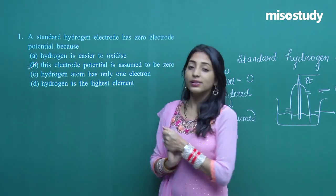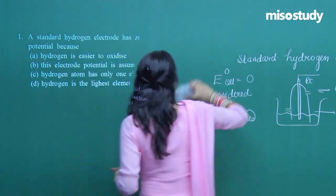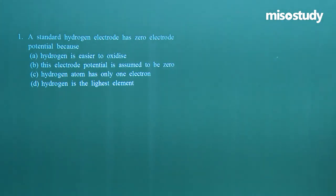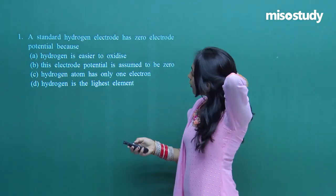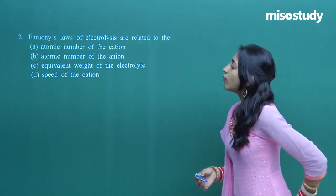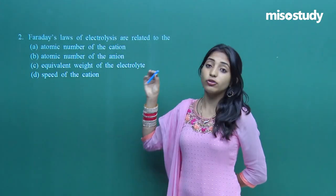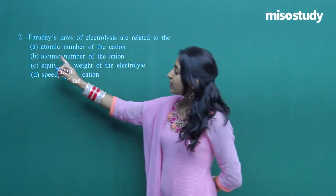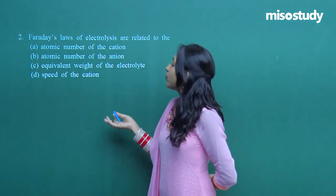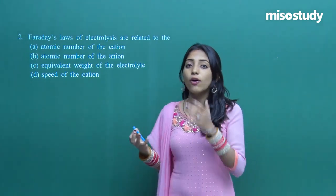Moving on to question number two: Faraday's laws of electrolysis are related to what? The options are: atomic number of the cation, atomic number of the anion, equivalent weight of the electrolyte, or speed of the cation. Let's recall Faraday's laws of electrolysis.